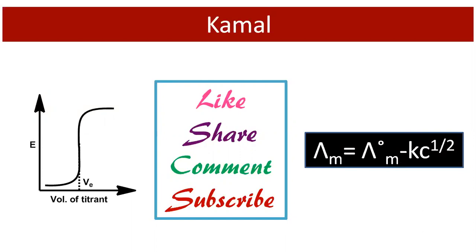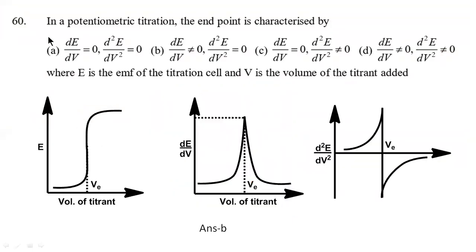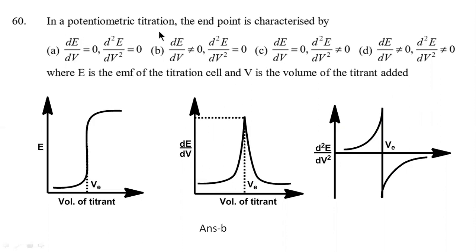Let's start. This is a question that came in CSIR — I have seen it two or three times in different papers. They are asking: in a potentiometric titration, the endpoint is characterized by — they have given four options — where E is the EMF of the titration cell and V is the volume of titrant added. There can be various types of titration: acid-base, redox, and others. The key point is how to identify the endpoint in a potentiometric titration.